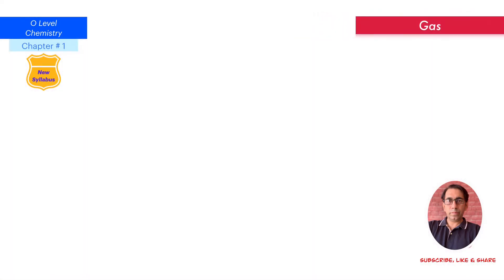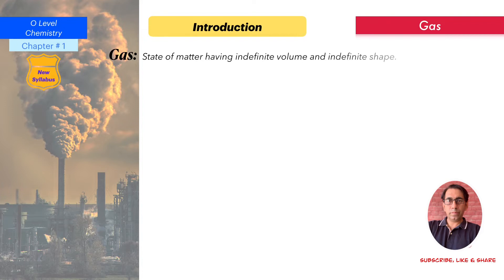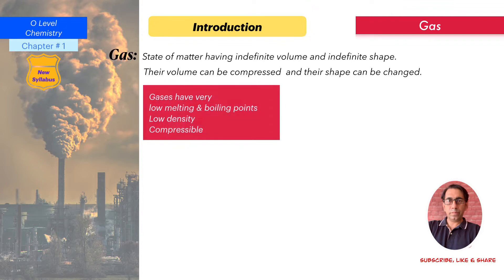Now, gases. A gas is a state of matter having indefinite volume and indefinite shape — both volume and shape are indefinite. The volume can be compressed and the shape can be changed. General properties: gases have very low melting and low boiling points, low density, and are compressible — we can compress a gas and change its volume.